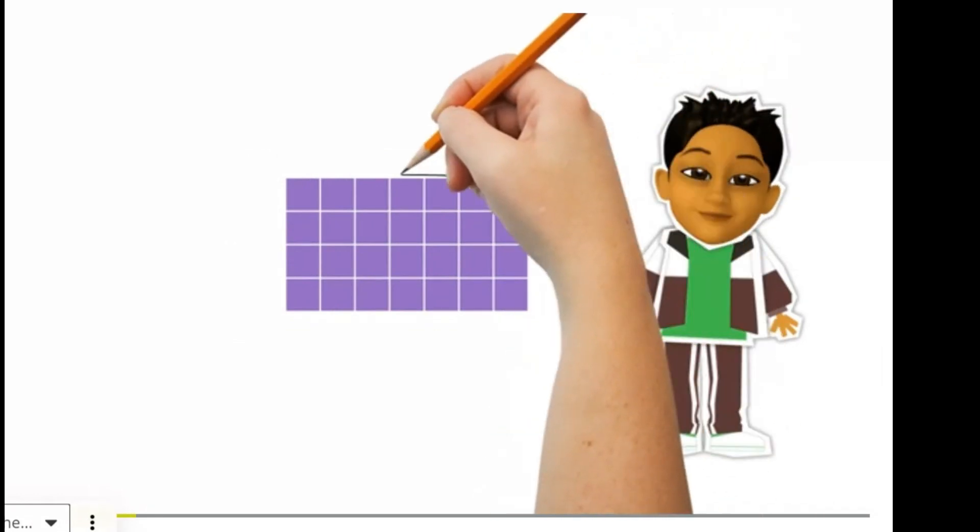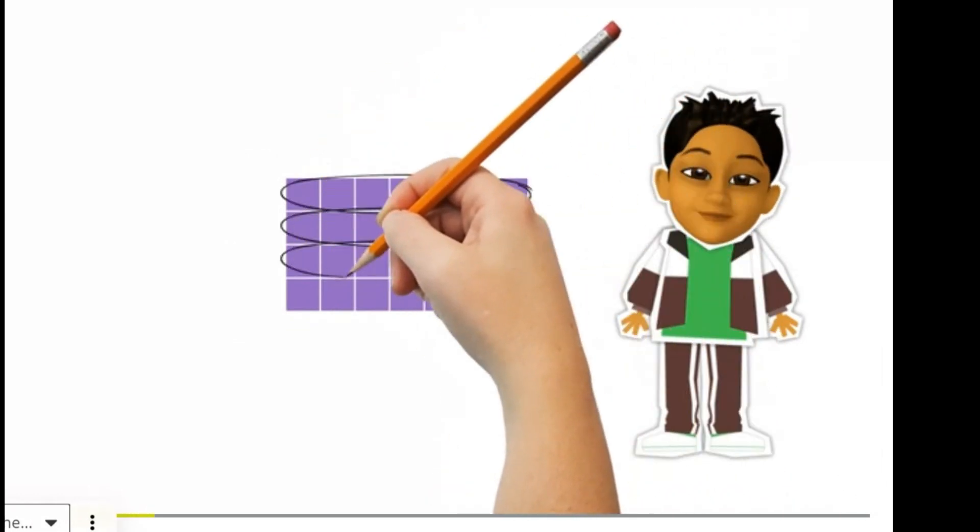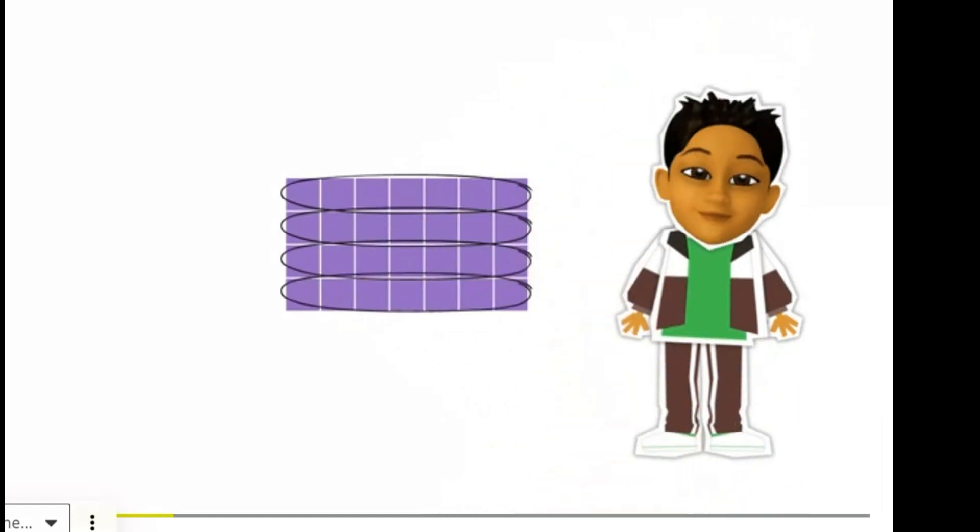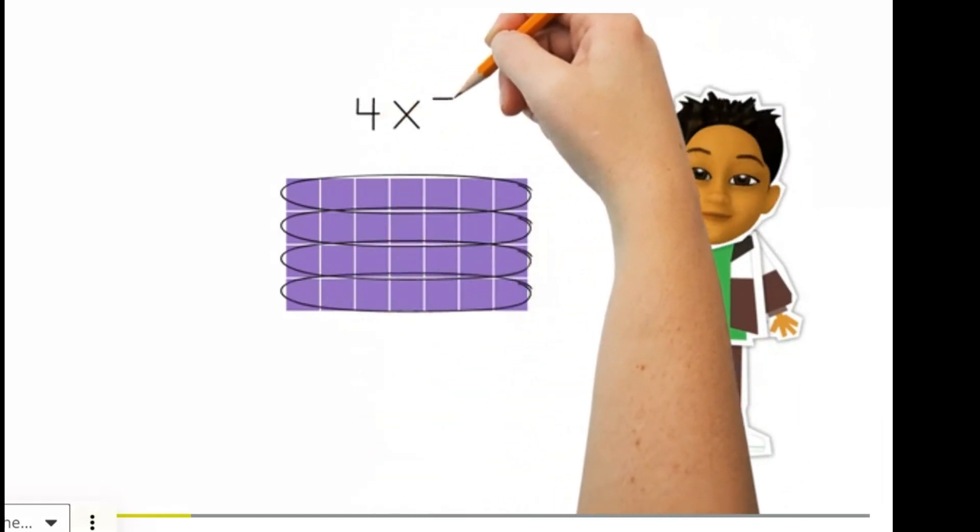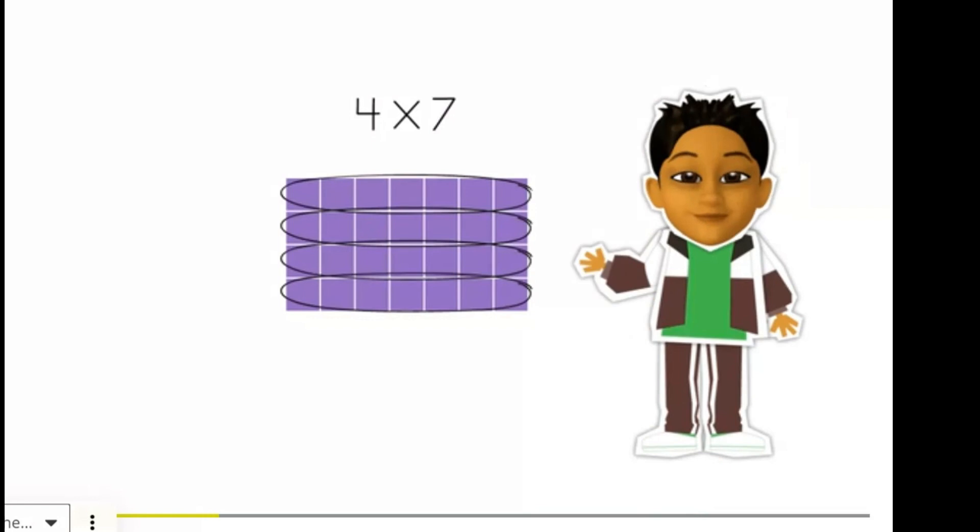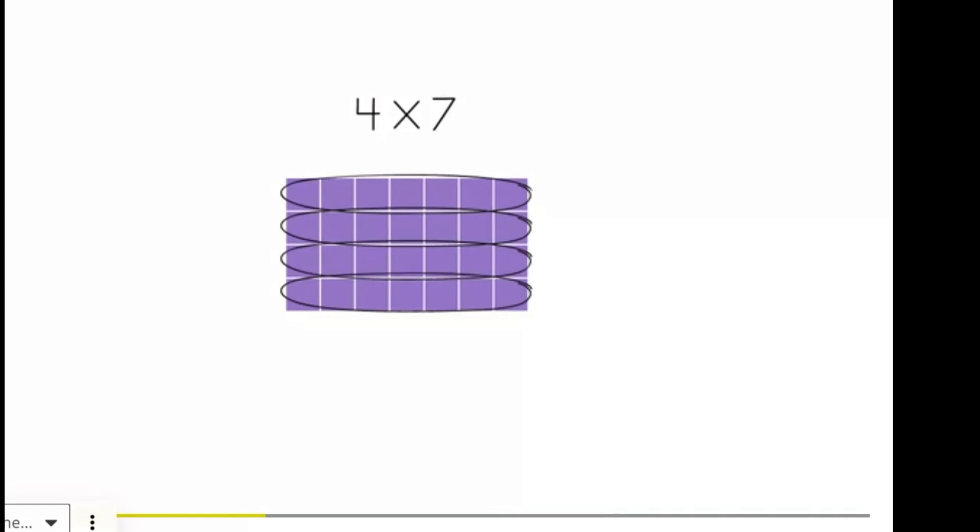We know that we can use arrays to represent multiplication problems. This array shows the problem four times seven. I see four groups of seven! Good, Carlos!